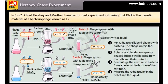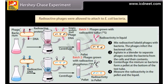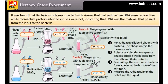In 1952, Alfred Hershey and Martha Chase performed experiments showing that DNA is the genetic material of a bacteriophage known as T2. They grew some viruses on a medium containing radioactive phosphorus, producing radioactive DNA, and some others on a radioactive sulfur-containing medium, producing radioactive proteins. Radioactive phages were allowed to attach to E. coli bacteria. It was found that bacteria infected with viruses that had radioactive DNA were radioactive, while those infected with radioactive proteins were not, indicating that DNA was the material that passed from the virus to the bacteria.